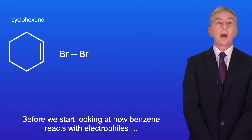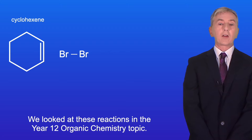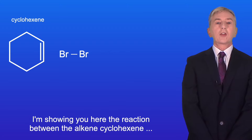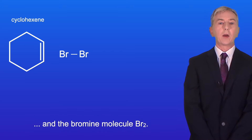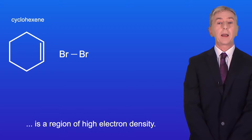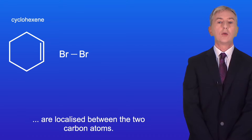Before we look at how benzene reacts with electrophiles, I'd like to recap the reaction between alkenes and electrophiles, which we looked at in the year 12 organic chemistry topic. I'm showing you here the reaction between the alkene cyclohexene and the bromine molecule Br2. The bromine molecule does not have a dipole; however, the double bond of the cyclohexene molecule is a region of high electron density, because the two electrons in the pi bond are localized between the two carbon atoms.